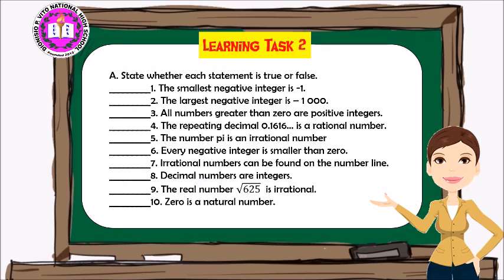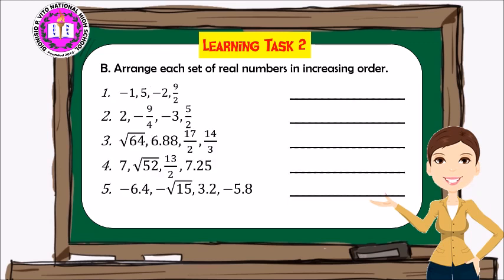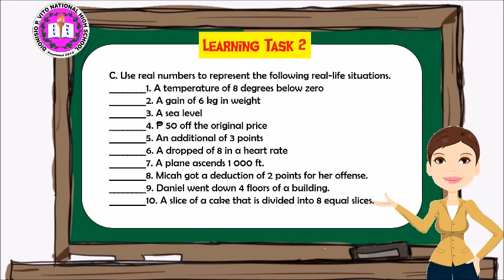Now let's move on to answering Learning Task Number Two. On letter A, state whether each statement is true or false. On letter B, arrange each set of real numbers in increasing order. On letter C, use real numbers to represent the following real-life situations.